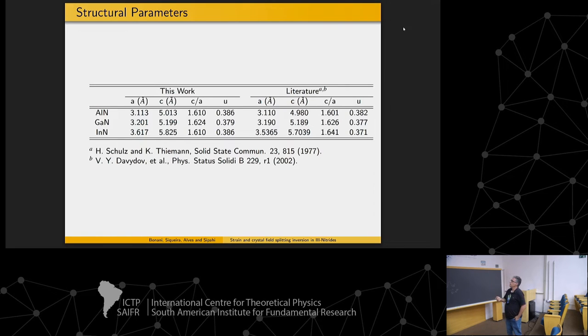It's important to see here that if you have, this is a sp3 hybridization. Usually when you have it free, all four bonds have the same size. In this case, if that was the truth, this number would be 0.375 and not 0.386, not 0.379, not 0.386. This means that when you grow a wurtzite, this either goes down or bigger, this distance on the fourth bond.